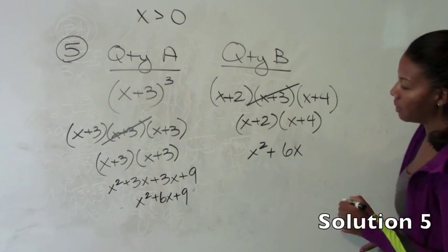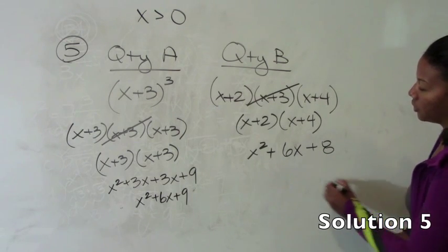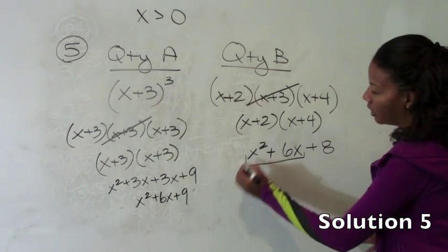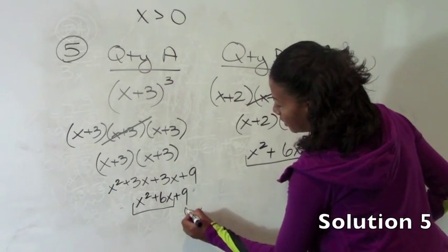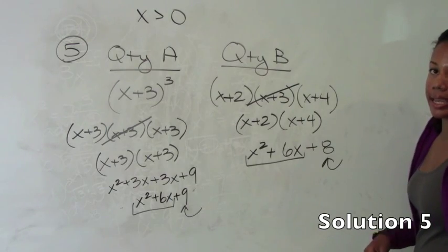Over here if we FOIL we get x squared plus 4x on the outside and 2x on the inside. So I'm just going to go ahead and combine them now and put 6x plus 8. You'll notice that this part and this part is the same so the only difference is this 9 and this 8. Therefore quantity A is bigger.